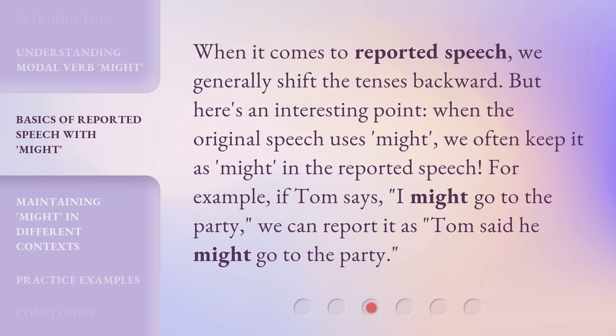When it comes to reported speech, we generally shift the tenses backward. But here's an interesting point: when the original speech uses 'might,' we often keep it as 'might' in the reported speech. For example, if Tom says, 'I might go to the party,' we can report it as, 'Tom said he might go to the party.'